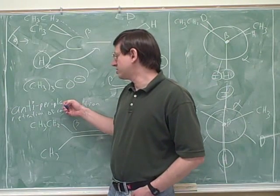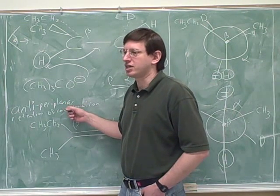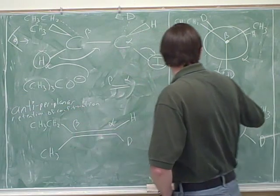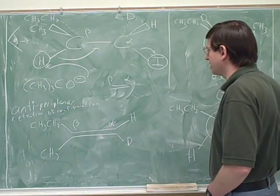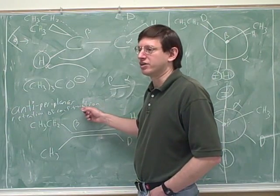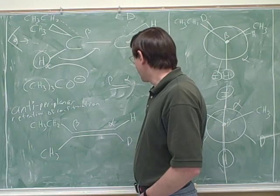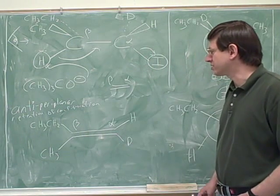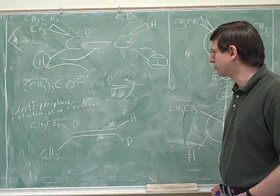Remember that once you have the anti-periplanar transition state, you just retain that configuration in the product. So anything that is on the same side of our line in the Newman projection will still be on the same side of the double bond over here. All right. And then that finally gives us our product. And that's going to be our answer over there. So that's quite a bit of work.